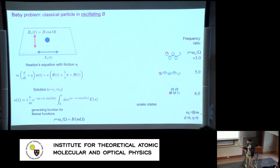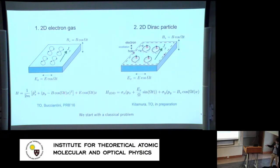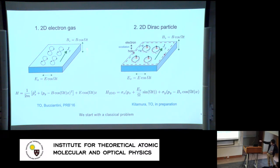Before going to the quantum magnetic problem, let's understand the essence of the physics. An audience member pointed out: with minimal coupling, there should be an electric field from the time derivative of the vector potential. The clarification is that the time-dependent vector potential in the Hamiltonian gives the magnetic field, and there is an additional real electric field in the y direction — these are two separate external fields, one giving the oscillating magnetic field and one giving the dynamic electric field that breaks translational invariance.